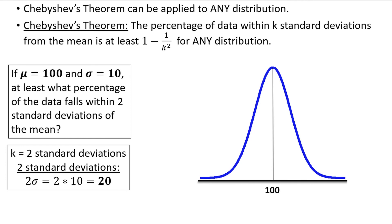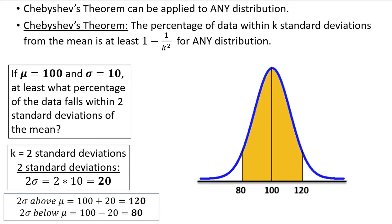So, two standard deviations above the mean is 100 plus 20, which is equal to 120, and two standard deviations below the mean is 100 minus 20, which is equal to 80. So now we understand the picture and the problem a little bit better. We want to know what percent of the data falls between the values 80 and 120. So the area we need to solve for is this shaded area in the middle between 80 and 120.